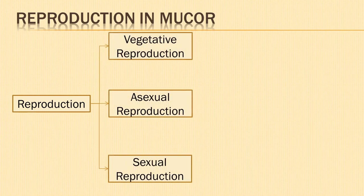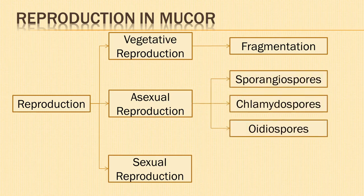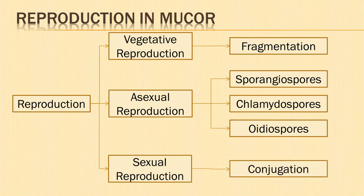Next is reproduction in Mucor. Mucor shows three modes of reproduction: namely vegetative reproduction, asexual reproduction and sexual reproduction. Vegetative reproduction is by fragmentation. Due to accidental breakage, the mycelium breaks into small fragments, and each fragment develops into new mycelium. Asexual reproduction takes place by sporangiospores, chlamydospores and oediospores. Sexual reproduction takes place by the method of conjugation.